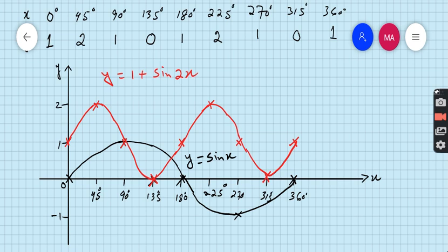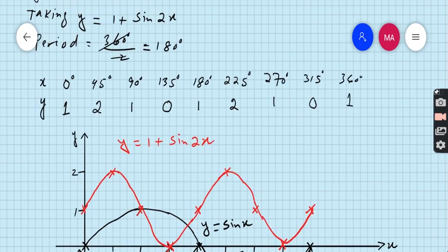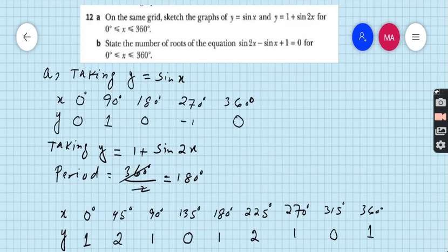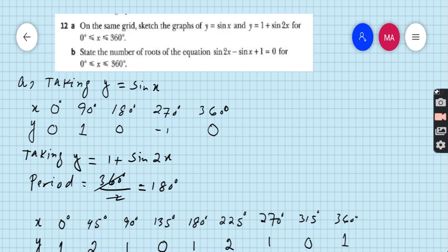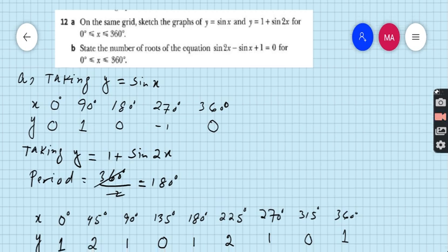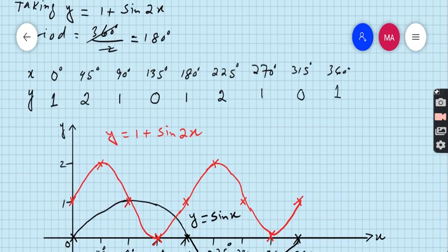I hope you completely understand how to sketch two graphs in one axis. Part b: state the number of roots of the equation sin 2x minus sin x plus 1 equals 0 for 0 to 360 degrees.